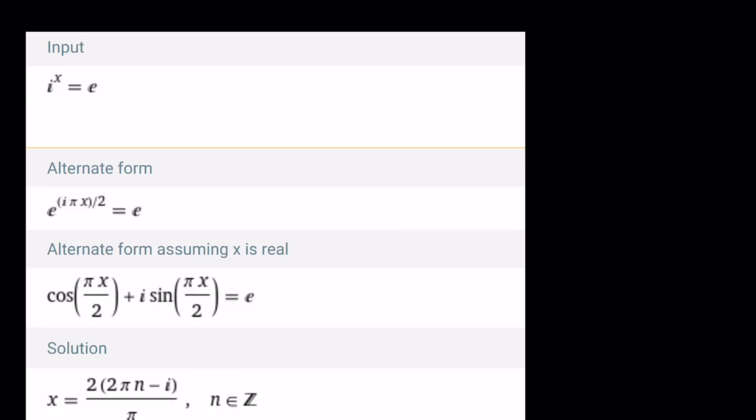The Wolfram Alpha gave us the following answer. i to the power x equals e. And then if you plug it in, and there's obviously some alternate forms that you can write it in, like this or like that, and we're given this type of solution. Why do you think that solution is different from what I found?